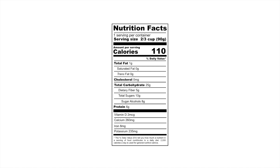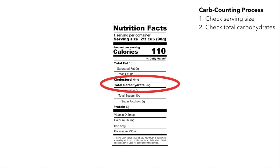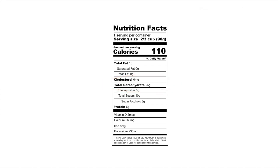So now that you know what the serving size is, the next thing that you should look at is the total carbohydrates. Now you know how many total carbohydrates are in the food — it seems like you should be done, but there are a few more numbers to take into consideration.